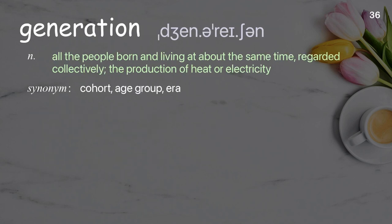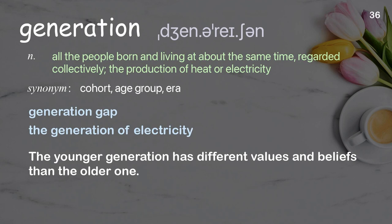Generation: all the people born and living at about the same time regarded collectively; the production of heat or electricity. Examples: generation gap, the generation of electricity. The younger generation has different values and beliefs than the older one.